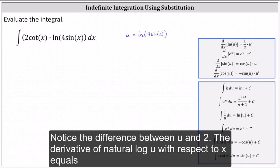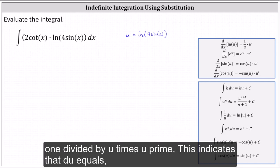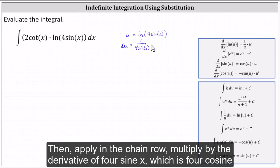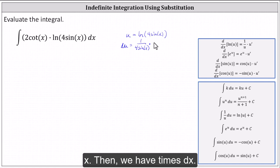The derivative of natural log u with respect to x equals one divided by u times u prime. This indicates that du equals, again, one divided by u is going to be one divided by four sine x, and then applying the chain rule, we multiply by the derivative of four sine x which is four cosine x.